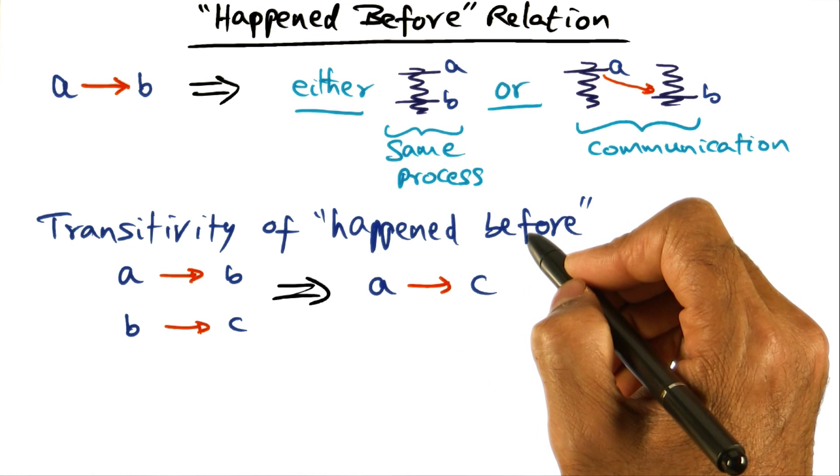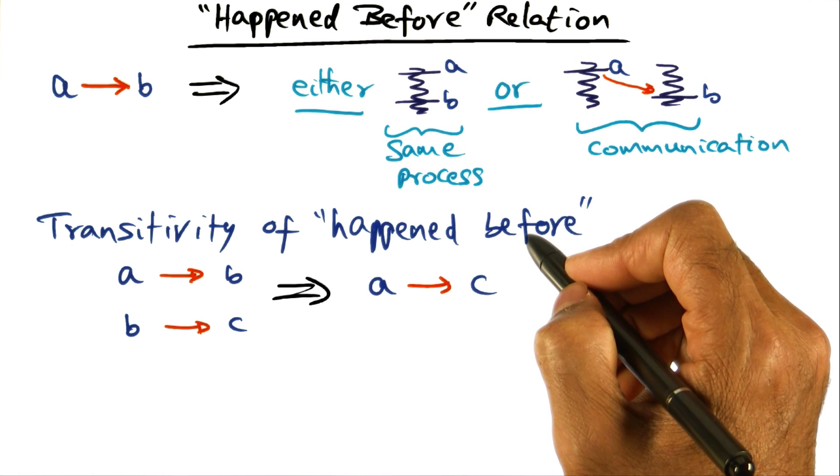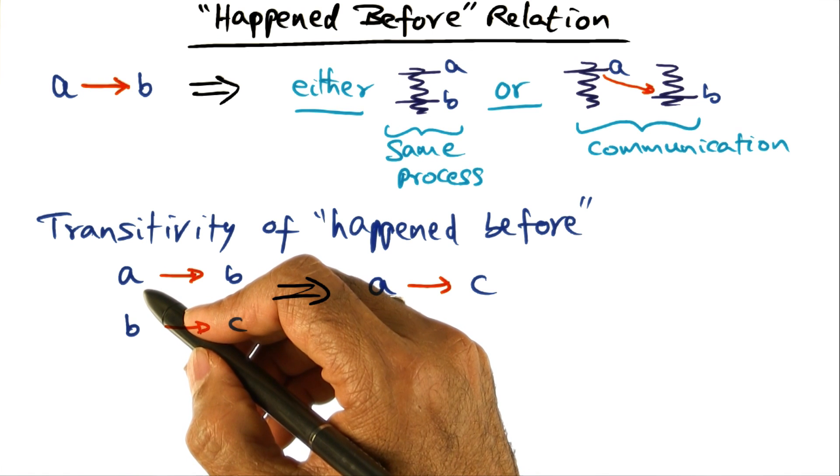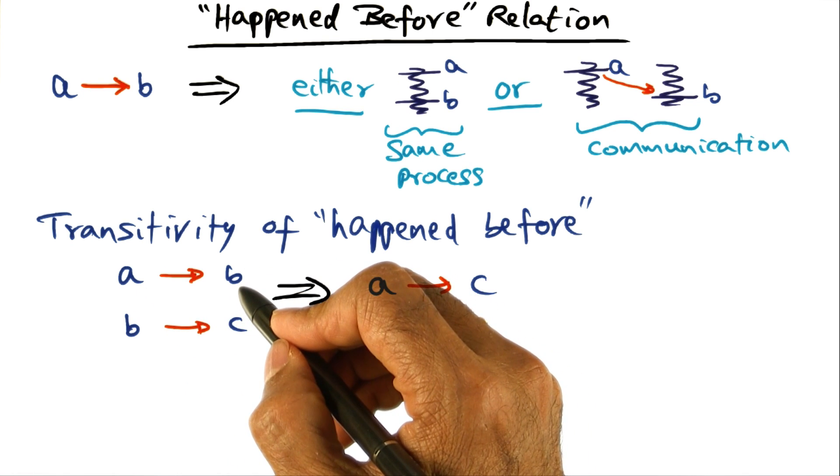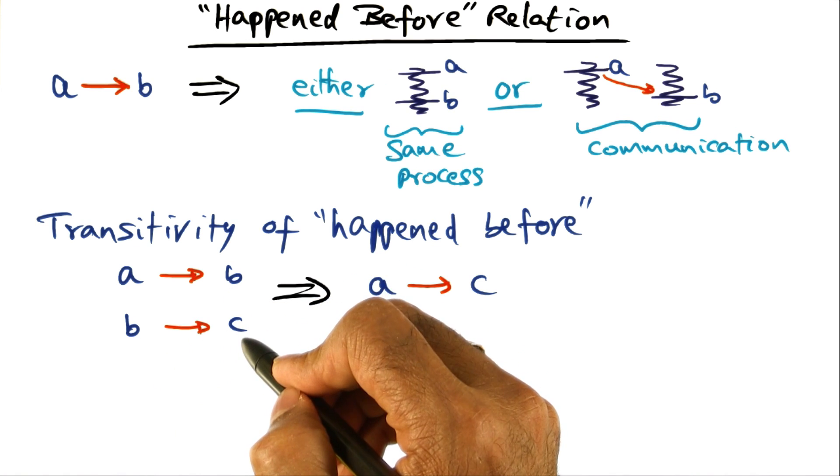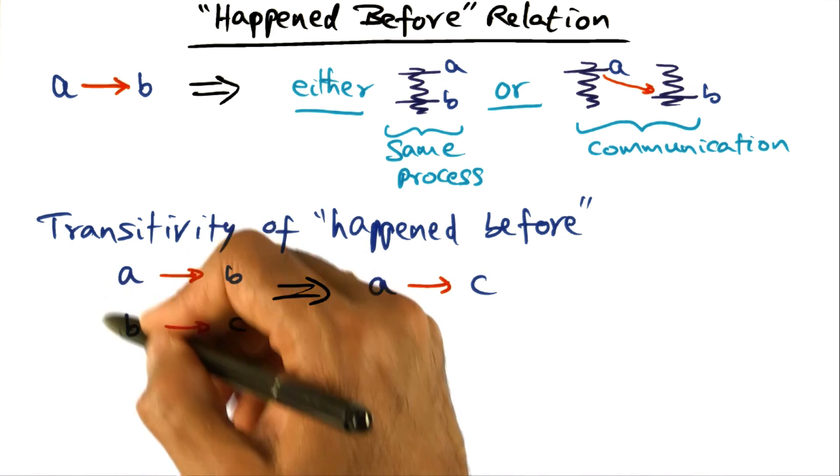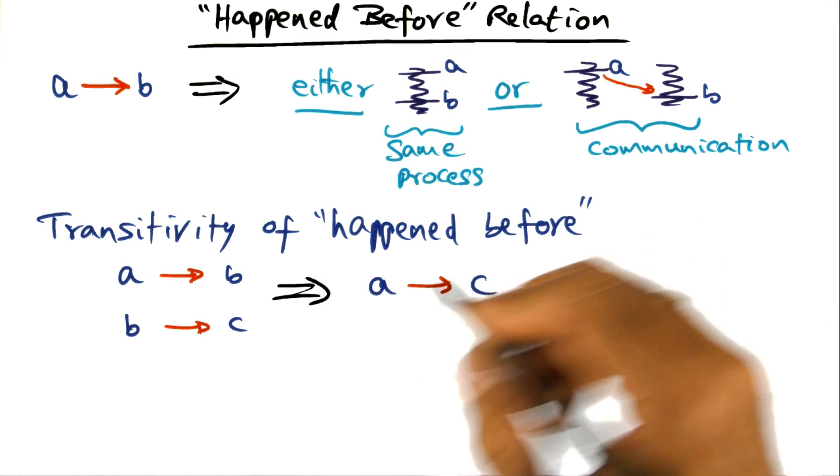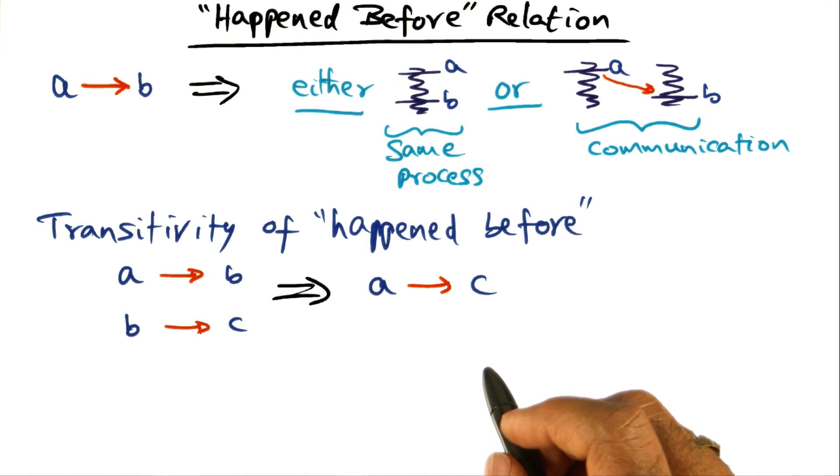The other property of the happen before relationship is that it is transitive. What I mean by that is, if we are asserting that there is an event A that happened before B, and this event B happened before C, the implication is this relationship is transitive, and therefore A happened before C. So that's the transitivity of the happen before relationship.